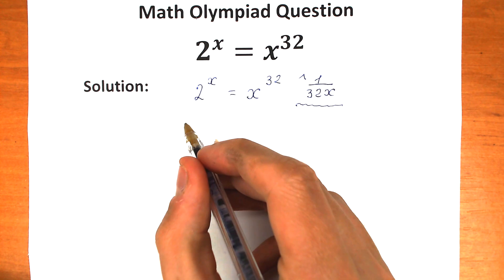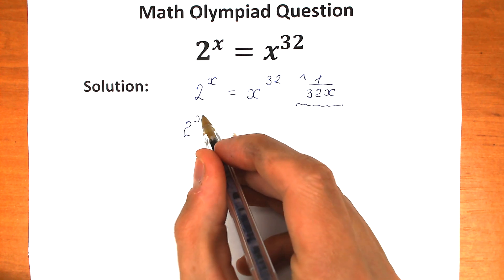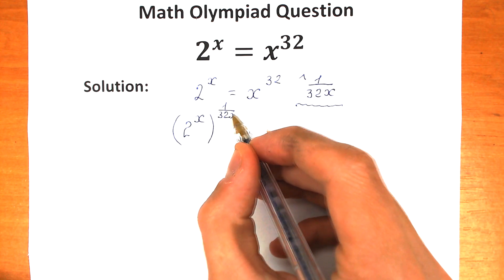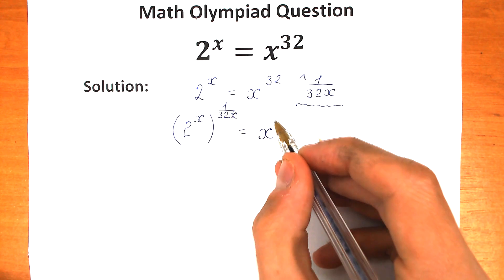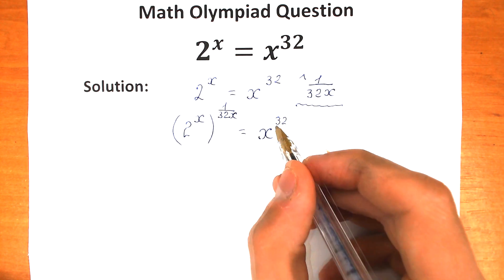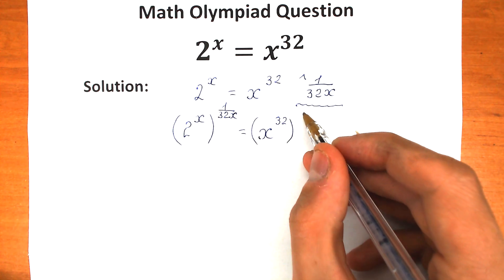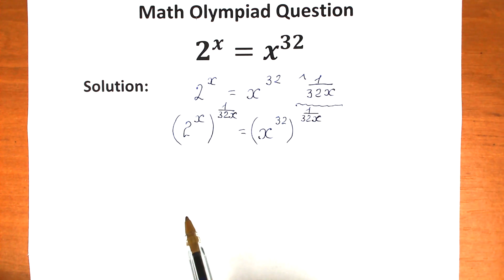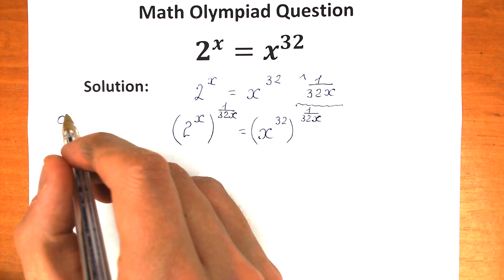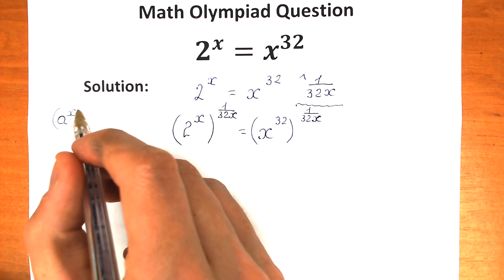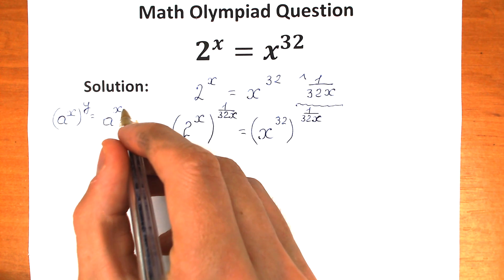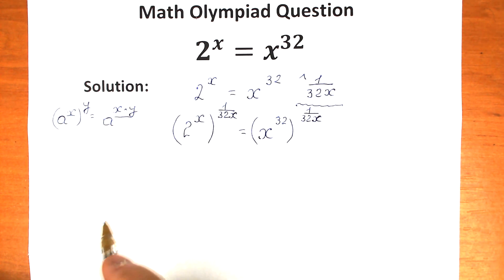So we have 2 to the x, raised to the power 1 over 32x, equal to x to the power 32 also raised to the power 1 over 32x. Now it's really useful to know the power rule: if we have a to the power x, raised to the power y, it equals a to the power x times y. So we can multiply our exponents.